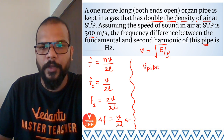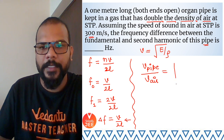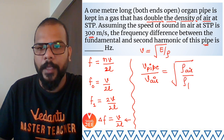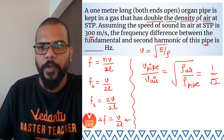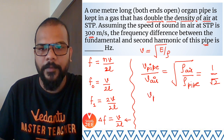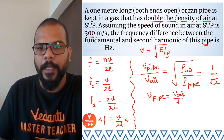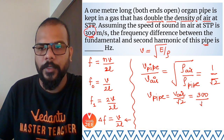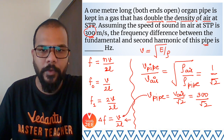For the ratio of velocity of sound in the pipe to velocity of sound in air, we get the square root of rho_air divided by rho_pipe. Since the density in the pipe is double that of air, this becomes 1 over root 2. So velocity of sound in the pipe equals v_air divided by root 2, and since v_air is 300 m/s, we get 300/√2.